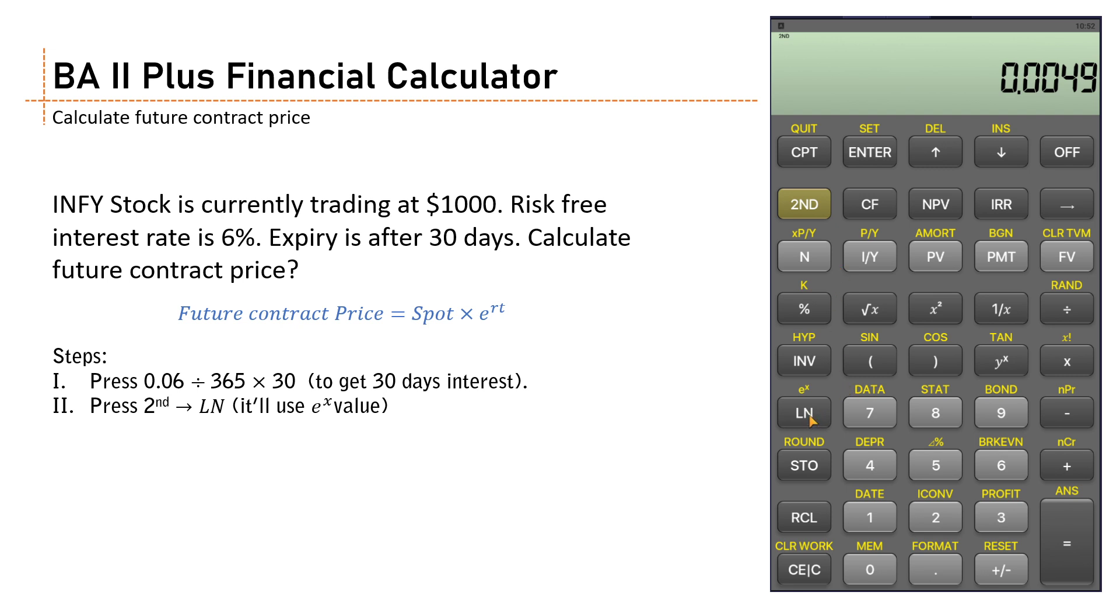Now you have the interest. Multiply this with the spot rate to get the future contract price. So multiply this figure with the spot price.